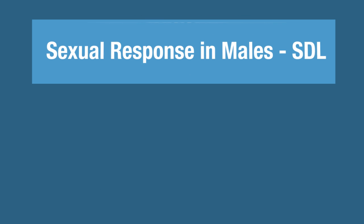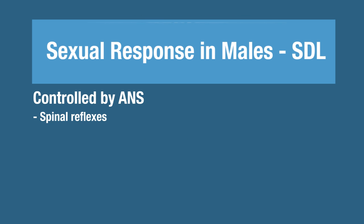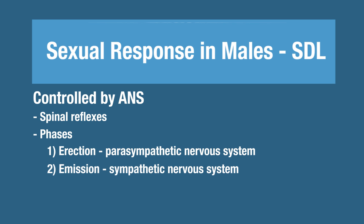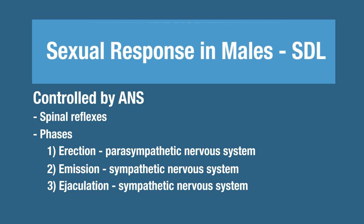The sexual response in males is controlled by the autonomic nervous system and includes spinal reflexes. There are three different phases involved: the erection phase, followed by the emission phase, which is then followed by ejaculation. The erection phase is regulated by the parasympathetic nervous system, whereas the emission phase and the ejaculation phase are both regulated by the sympathetic nervous system.